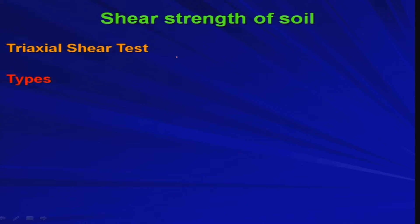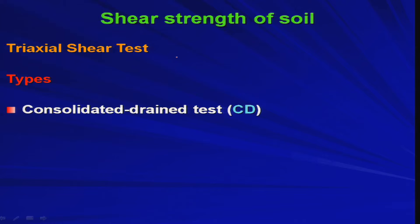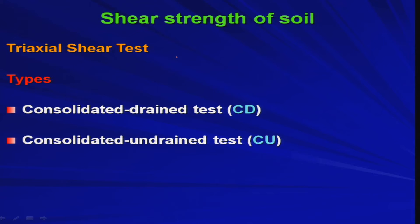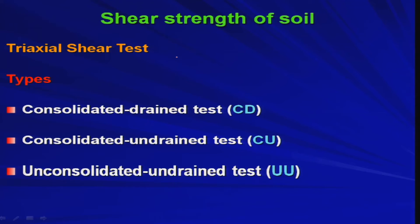The soil specimen has porous discs at the top and bottom to facilitate drainage. Under applied pressure, the soil specimen may consolidate, and this consolidation is facilitated by drainage of water from the specimen through the porous stones. Pore pressure can be measured through pipes connected to a pore pressure measurement arrangement. There are three different types of triaxial tests: the consolidated drained test (CD test), the consolidated undrained test (CU test), and the unconsolidated undrained test (UU test). These will be discussed separately in the next class.